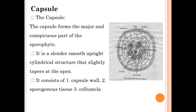The capsule forms the major and conspicuous part of the sporophyte. It is a smooth, upright, cylindrical structure that slightly tapers at the apex. It consists of three parts: one — the capsule wall; two — sporogenous tissues; and three — the columella.